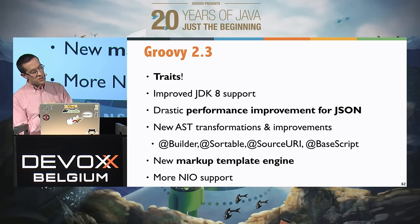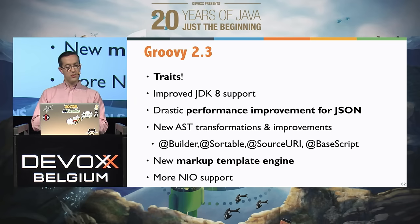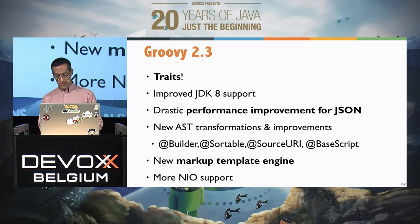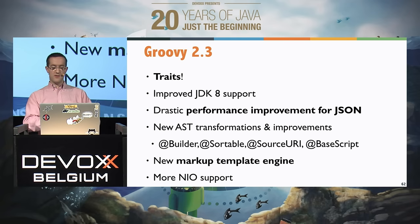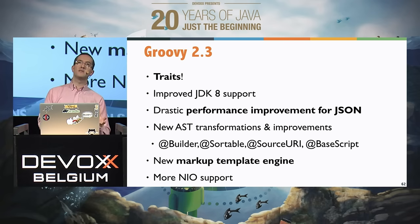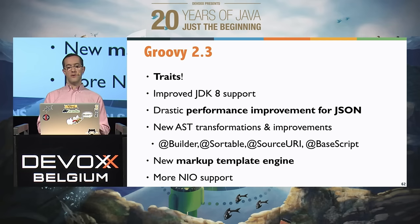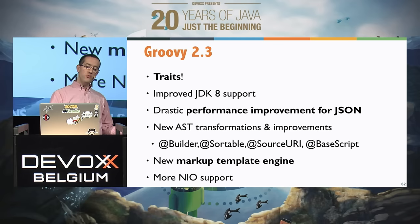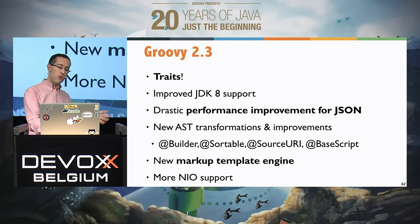In Groovy 2.3 we further improved the performance of JSON support, added new AST transformations, and introduced a new Markup template engine. Groovy has had several template engines for years, but this new one adds static type checking and static compilation support, so templates can be pre-compiled and execute as fast as possible. That covers the history of Groovy up through Groovy 2.3, until the beginning of this year.